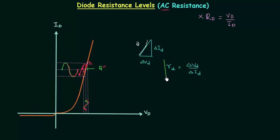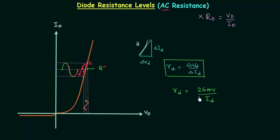In numerical problems we will not draw the tangent line through the operating point to calculate Rd. We will use another equation: Rd is equal to 26mV divided by Id. We will use this equation and derive it in this lecture. This is very important — by using this equation we can easily calculate the AC resistance by just knowing Id. We do not require the characteristics; we only need the diode current.